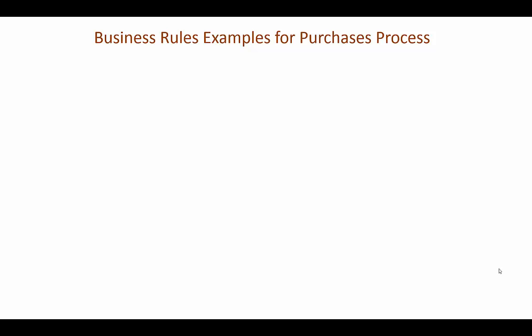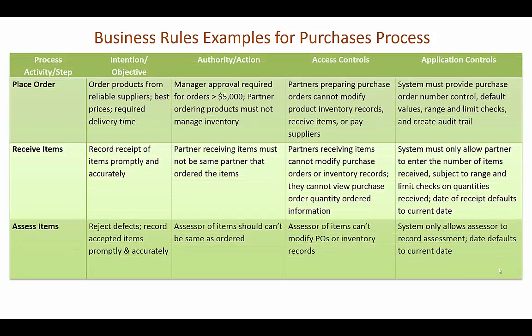We've taken a look at the basic activities for the purchase and payment process. Now we want to think about what are the key business rules that we want to follow. If we look at the table right there in the chapter for the example company, we can think about the key activities and steps that are performed as part of this process.